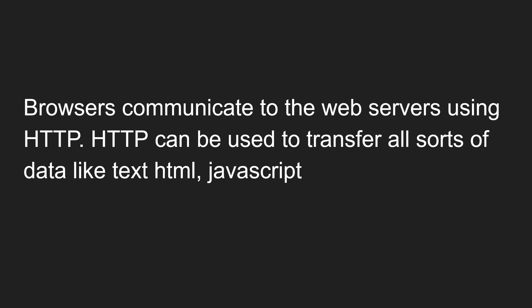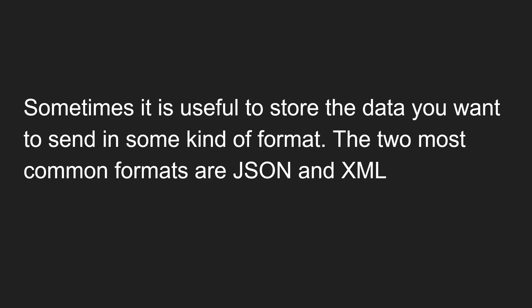Browsers communicate to web servers using HTTP. HTTP can be used to transfer all sorts of data like text, HTML, JavaScript, and more. Sometimes it is useful to store the data you want to send in some kind of format, so that the server can understand it easily. The two most common formats are JSON and XML. In AJAX, the last 'X' represents the XML format.